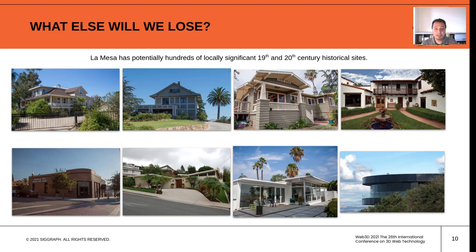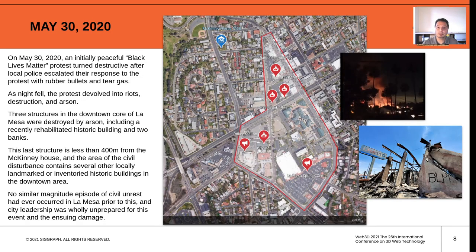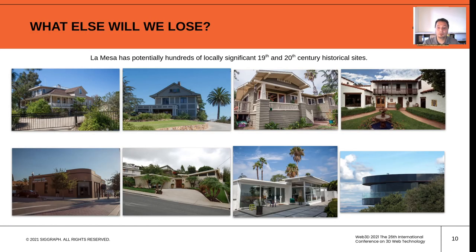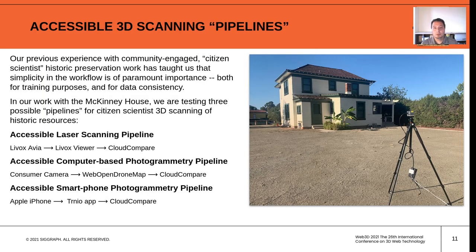The building is of local historic significance — it housed La Mesa's second bank and its first full-service grocery store. Unfortunately, even the remains are completely gone now; the whole structure had to be demolished completely. La Mesa is home to potentially hundreds of other locally significant 19th and 20th century historical sites. The McKinney House was less than a block away from the Randall Lamb Building — it literally could have been one of the buildings destroyed that night had the riots pushed over by yet one more block. Our community is not going to attract the attention of large institutions that have the ability to do professional-level laser scanning, other than the lucky happenstance of the Chronopoints team coming out in 2018.